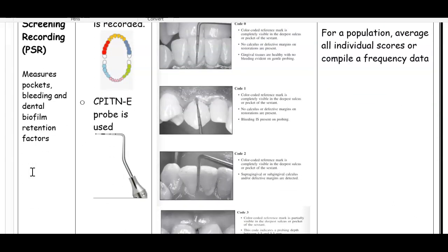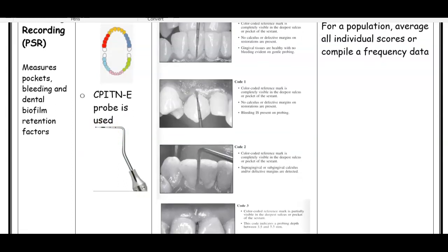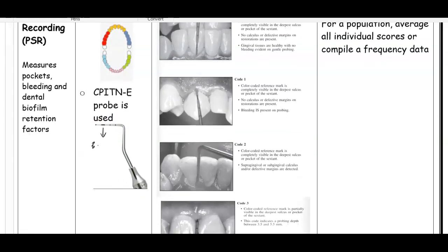The way it's done is they use a CPITN-E probe. There's a ball tip and then a black band. The range of this black band is 3.5 millimeters to 5.5 millimeters. If you're probing and the gingival margin comes to the very top of the black band, that's 3.5 millimeters, and at the very end of the black band, the measurement is 5.5 millimeters.